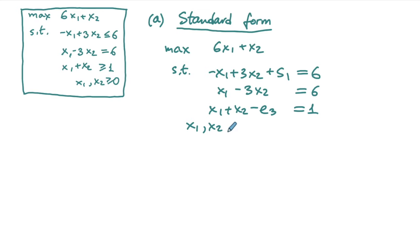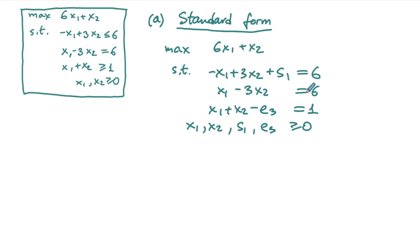We denote the excess variable e3 to indicate it belongs to the third row, even though there is no e1 or e2. All variables x1, x2, s1, e3 are non-negative. We now have the LP in standard form with only equality constraints and non-negativity of all variables.